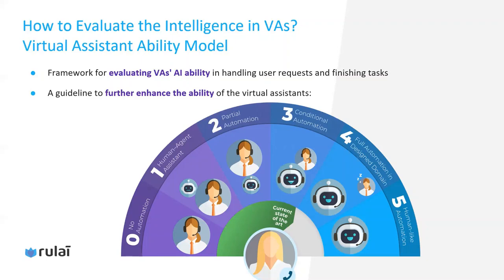In level two, we have partial automation. That means for tasks the virtual assistant is designed to handle, it can take control of those tasks if the conversation flows follow the design. Human agents need to be responsive and ready to take over. On level three, we have conditional automation — for tasks the virtual assistant is designed to handle, it can fully take control without human agents. Human agents will handle other tasks that the virtual assistant cannot or is not trained or designed to handle, such as tasks requiring human intervention or empathy.